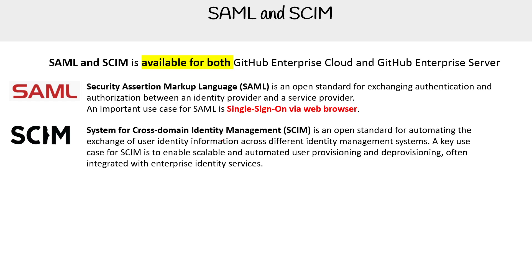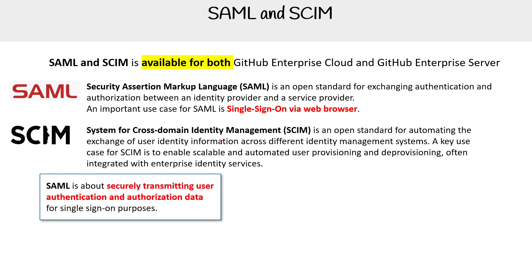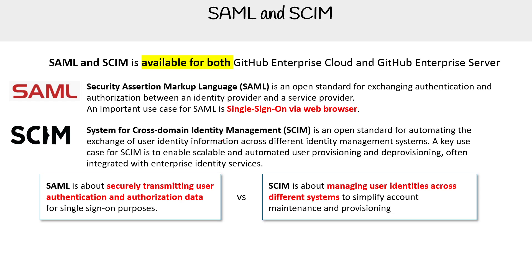I know it's a mouthful, but here's a simpler summary. SAML is about securely transmitting user authentication and authorization data for single sign-on purposes. And SCIM is about managing user identities across different systems to simplify account maintenance and provisioning. If you remember those two summaries, you'll know what they are.